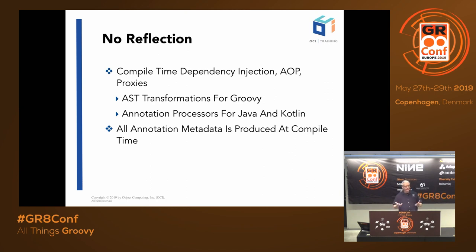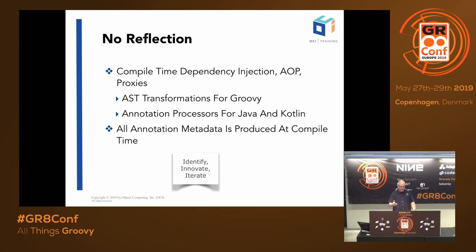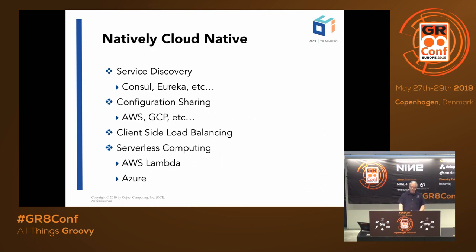For Java and Kotlin, AST transformations aren't part of the story at all. Those AST transformations and annotation processors are how we got rid of all the runtime reflection in Micronaut. That's another example of identify, innovate, and iterate — we identified an issue: in order to get this really great programming model, we're paying a cost that has to do with reflection and dynamic proxies. So we created new technology to change how that works, and that has enabled a bunch of the really compelling characteristics that Micronaut has to offer.